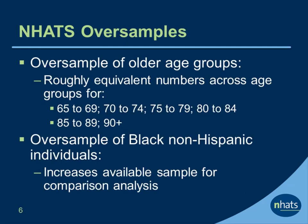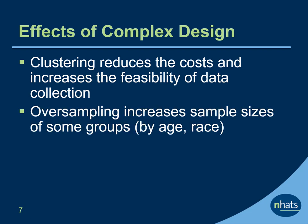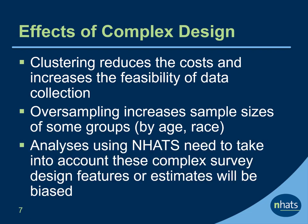In NHATS, the probabilities of being selected from the frame differ by age and race. NHATS oversamples older age groups with the goal of having roughly equivalent sample sizes across age groups. Black, non-Hispanic individuals also have a higher probability of selection relative to their representation in the national population. Cluster sampling reduces the costs and increases the feasibility of in-person data collection on a national scale. Oversampling increases sample sizes for some groups so that comparisons by age and race can be made. Analyses using NHATS need to take into account these complex survey design features or estimates will be biased.